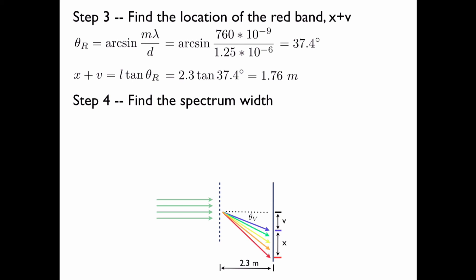Now we'll find the spectrum width. As stated, this is simply X plus V minus V, or 1.76 minus 0.77, which is 0.99 meters, or 99 centimeters.